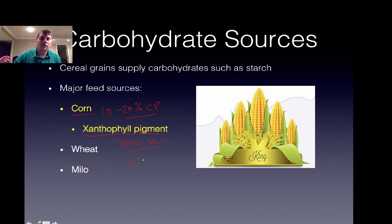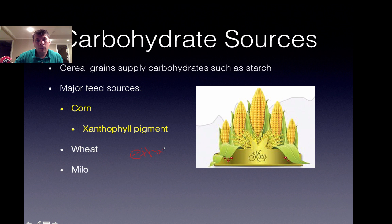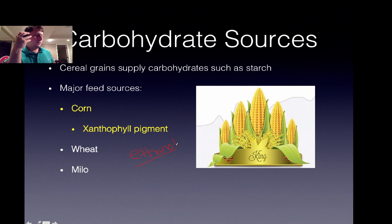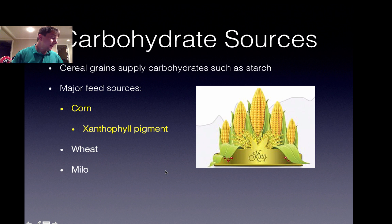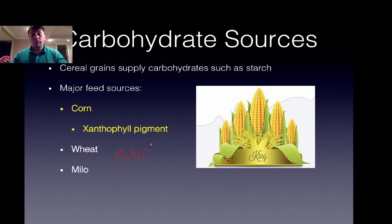Corn contains a xanthophyll pigment which causes yellow skin, which the American consumer prefers. Another contribution, especially in corn oil, is the essential fatty acid. However, there is a major issue: a lot of corn is now being diverted to ethanol production. There is a big concern in the poultry industry that as more corn is used for ethanol, the price may continue to rise — the average price of feed has increased by around 40%.